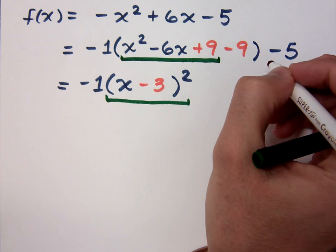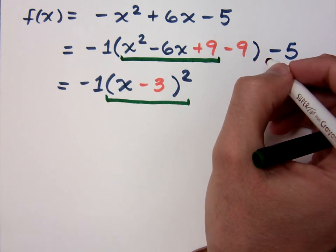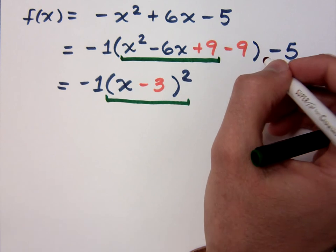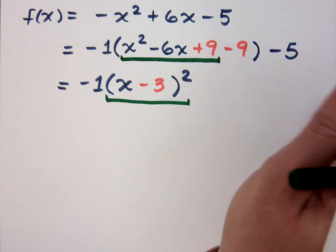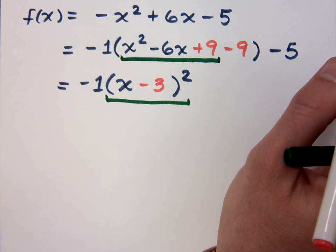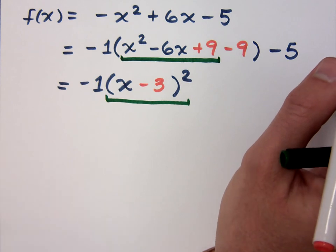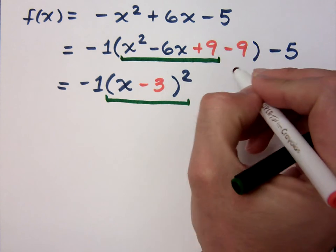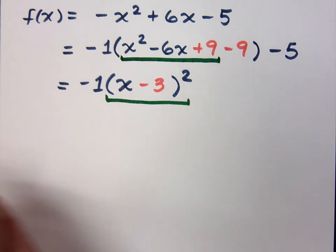Now, just so you guys don't get confused with what you were doing with completing the square from solving equations, with an equation what you would do to one side you would do to the other side, right? But I don't have the ability to work with two sides of an equation. I just have to work with the expression I have here.